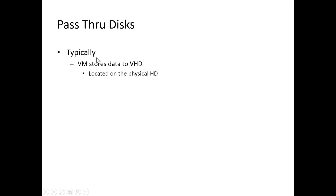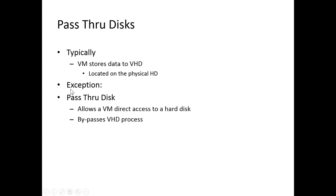Pass-through disks: typically you don't use pass-through disks. Typically the virtual machine stores data to the virtual hard disk, which is a file located on the physical hard disk. An exception is a pass-through disk. A pass-through disk allows a virtual machine direct access to the physical hard disk, bypassing the virtual hard disk process. This is the exception — you would only do it in unique cases.